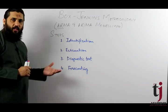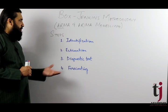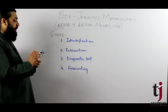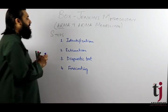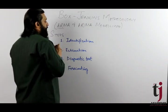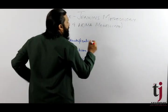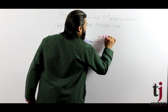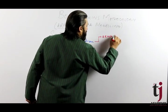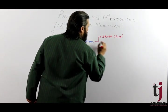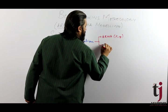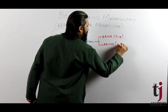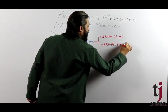Now we will show the steps of Box-Jenkins methodology. Step number one is identification — identifying whether we are using ARMA(p,q) or ARIMA(p,d,q).